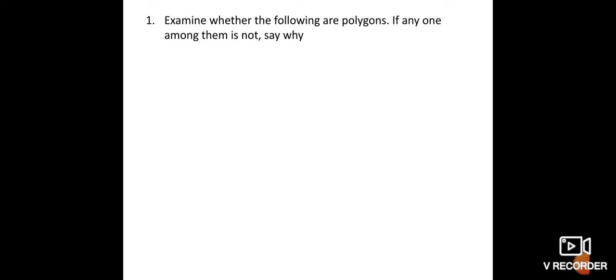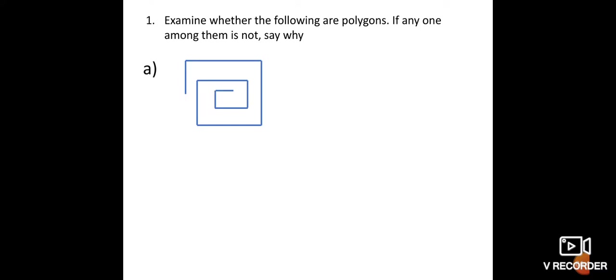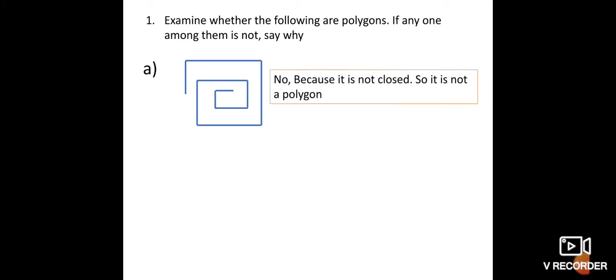The next question is to examine whether the following figures are polygons, and if not, say why. Figure A: Is this a polygon? No. The reason is it is not a closed figure. So we write: no, because it is not closed — therefore it is not a polygon.